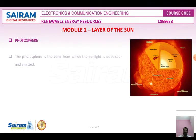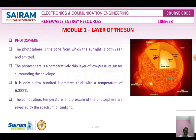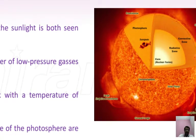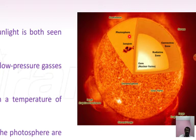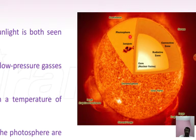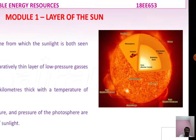The photosphere is the zone from which sunlight is both seen and emitted. It is a comparatively thin layer of lower-pressure gases surrounding the envelope, only a few hundred kilometers thick, with a temperature of about 6,000°C. The temperature, composition, and pressure of the photosphere are revealed by the spectrum of sunlight. A feature of the gas not belonging to any gas known on Earth was discovered there — named helium, after the Greek god of the sun.